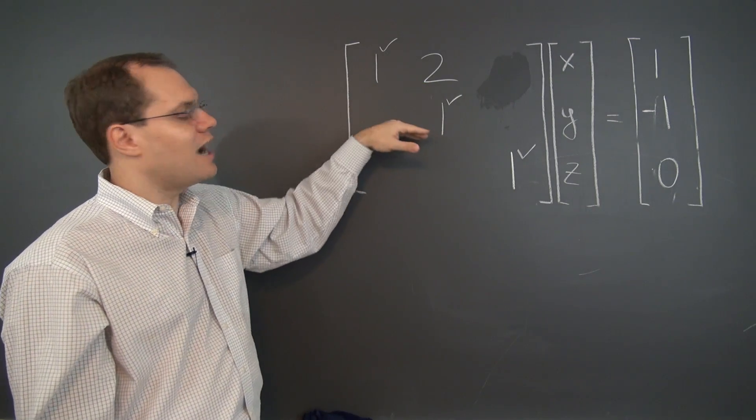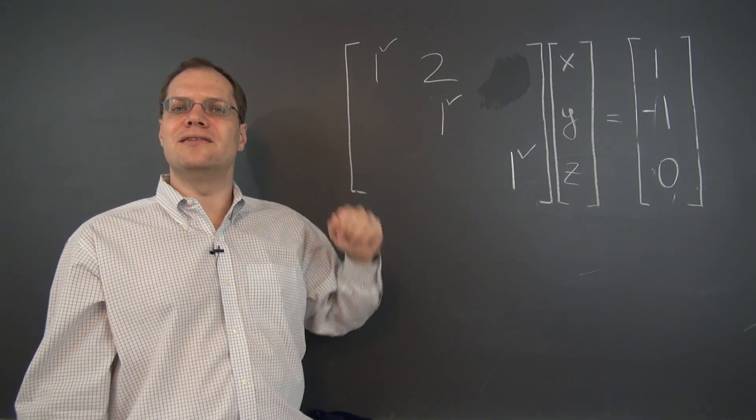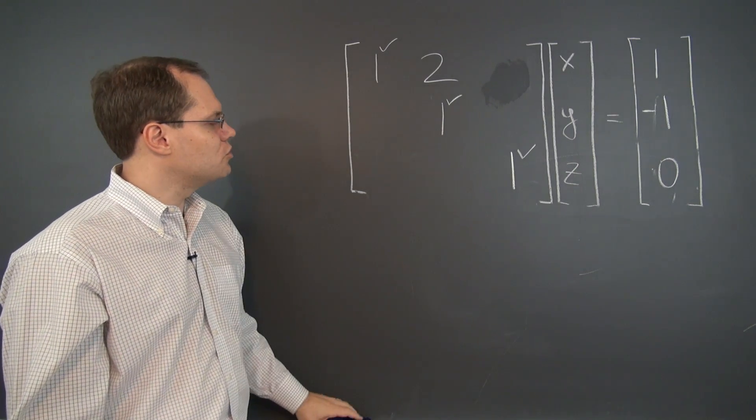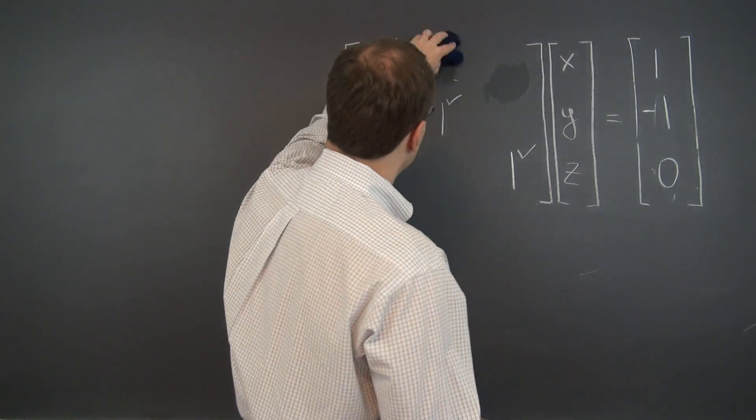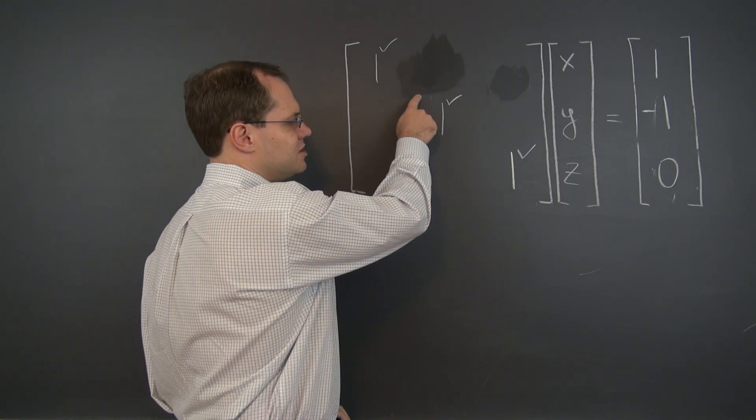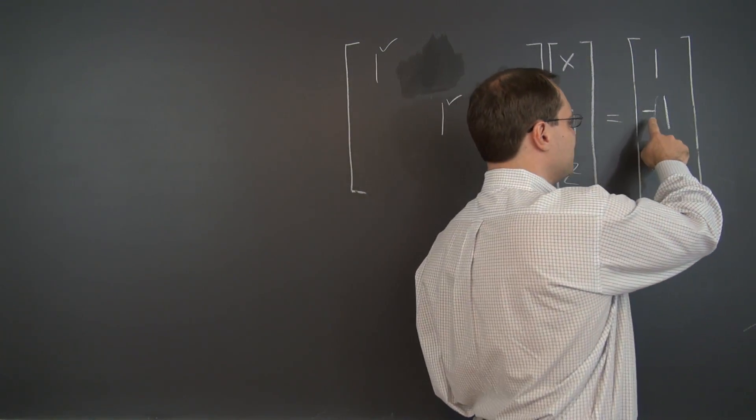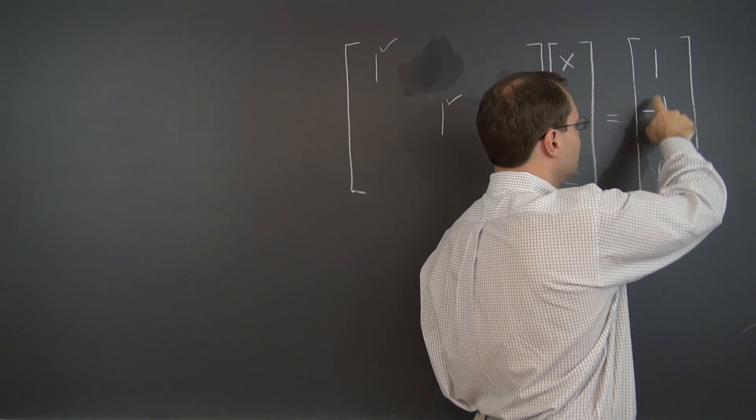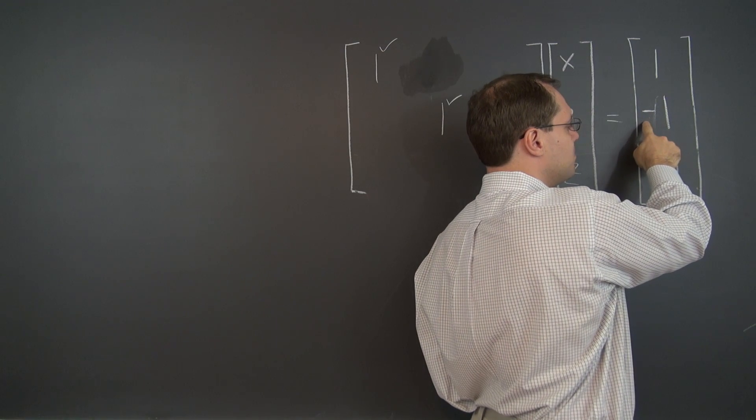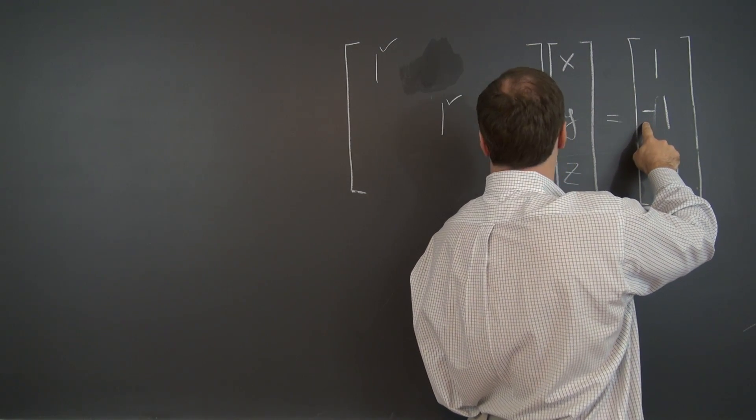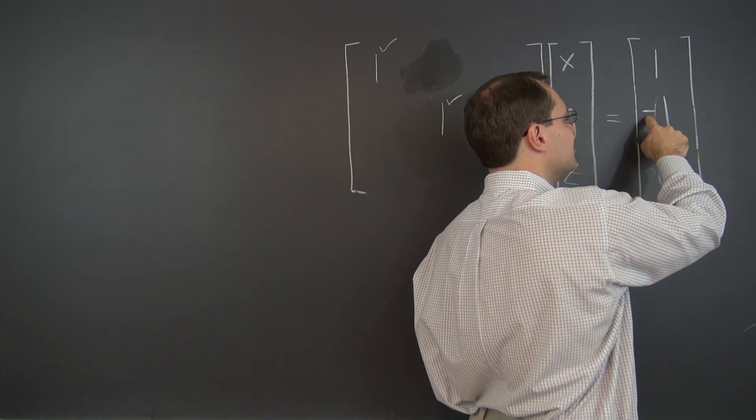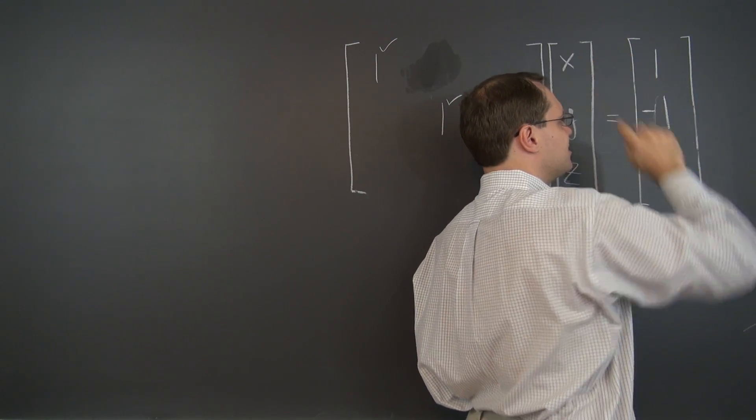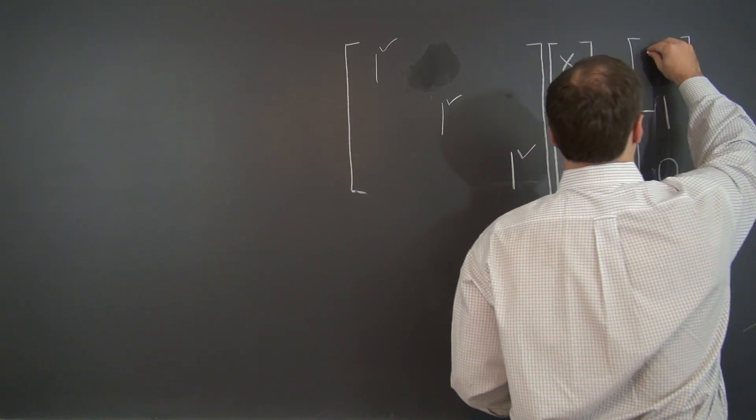So we will now use this one to eliminate the two, and that operation that will deliver that is subtracting two of row two from row one, which puts a zero here. And now let's be careful. Subtracting two of row two from row one, it's minus two subtracting two. So it's actually subtracting minus two, subtracting minus two is the same as adding two. So this is a three.